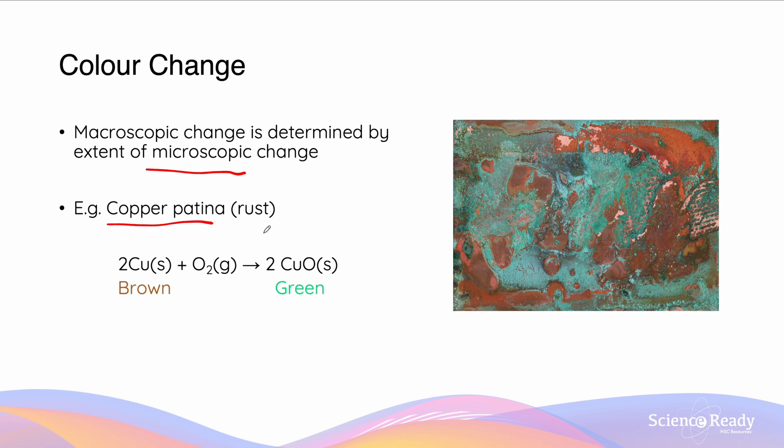Copper patina, or rusting, occurs where copper is exposed to oxygen and forms copper oxide. The image is demonstrated on the right hand side, where copper has this characteristic brown luster, but in the presence of oxygen when it forms copper oxide, it turns into this green teal colour. The extent of the colour change, from this brown to green colour, is going to be dependent on how much of a chemical reaction has occurred, meaning that the macroscopic change, what we see, is determined by the microscopic change.